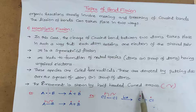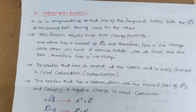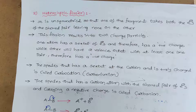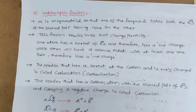The second type is heterolytic fission, which is different from homolytic fission. In homolytic fission, both bonded atoms share electrons equally. But in heterolytic fission, it is unsymmetrical — one atom can take both electrons and the other does not get any electron. So one fragment takes both the electrons of the shared pair, leaving none on the other. Because of both shared pair electrons going to one atom, charged species are formed.